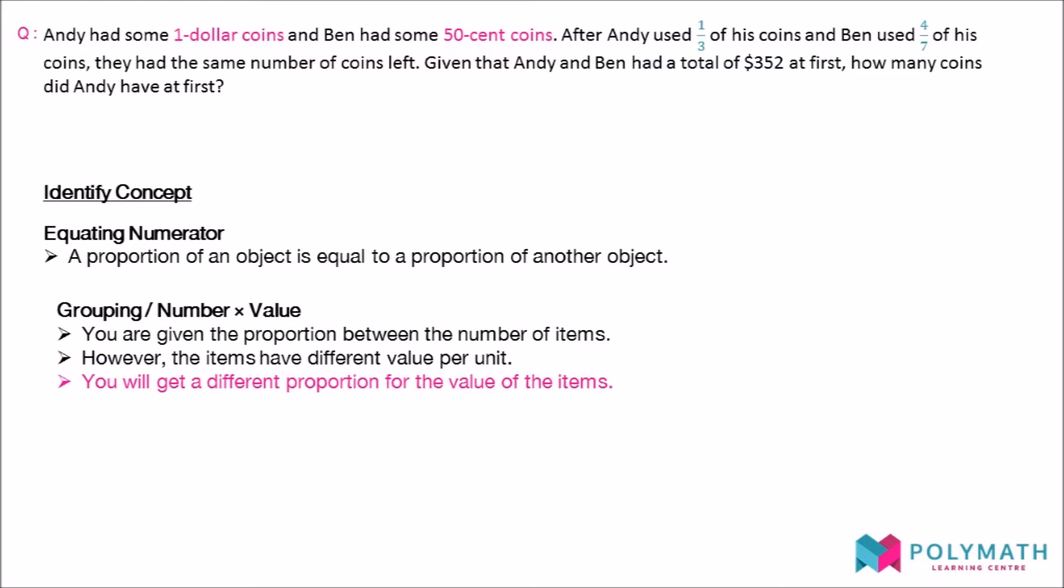In the question, we will find out the proportion between the number of coins Andy and Ben had. However, Andy had $1 coins which is different in value to the $0.50 coins that Ben had. Thus, we have to group the coins with different values together to solve the question.